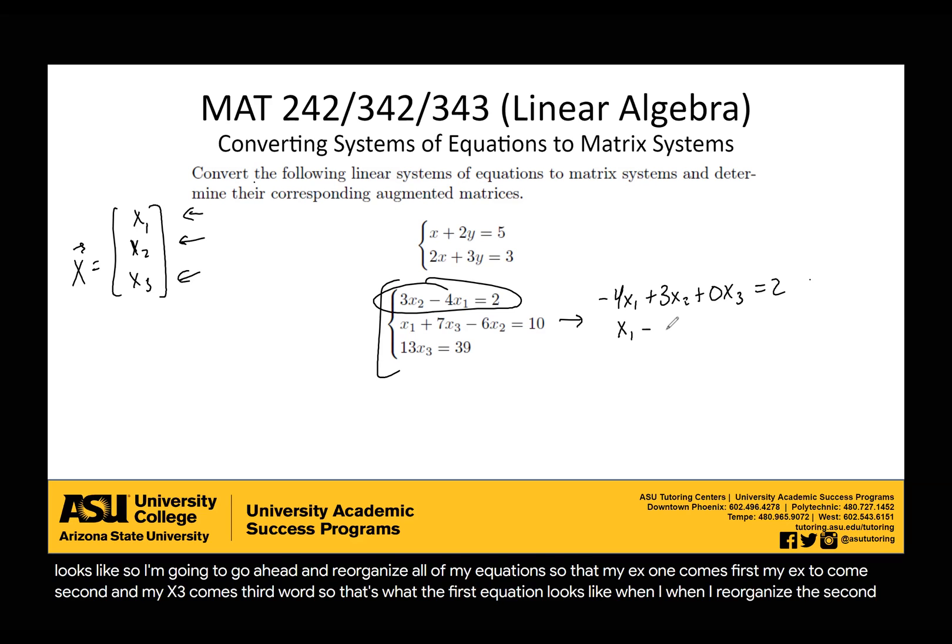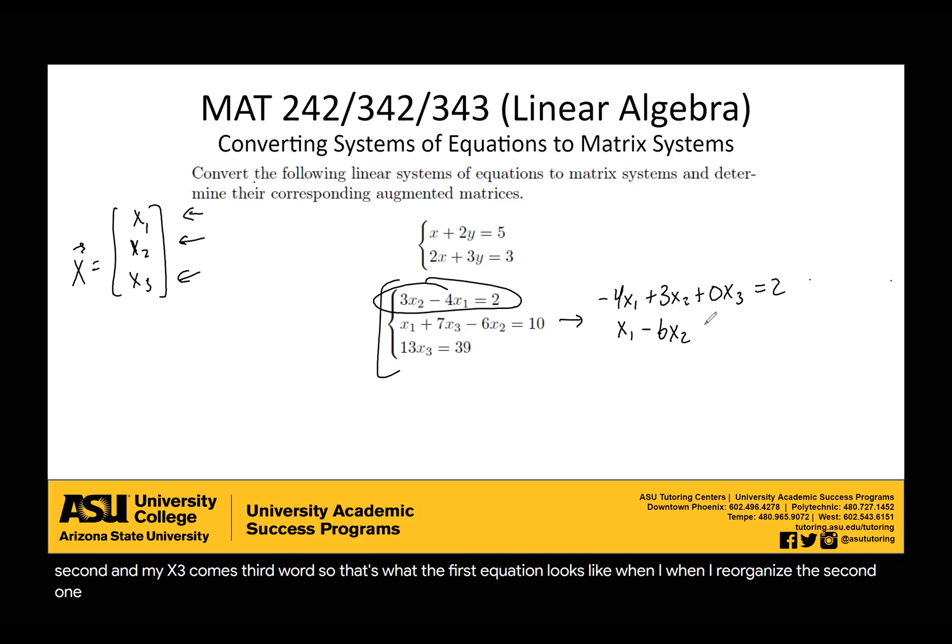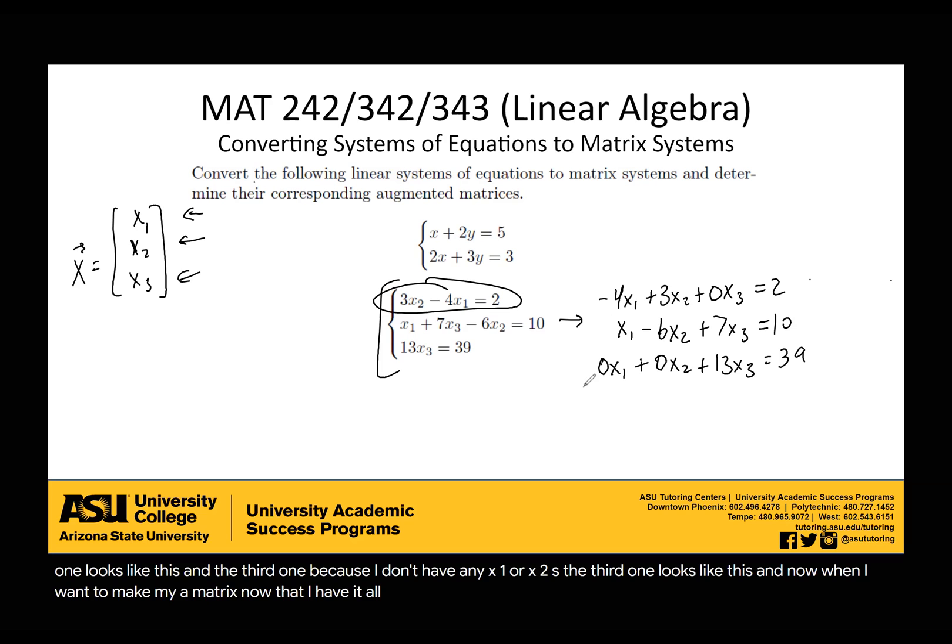So that's what the first equation looks like when I reorganize. The second one looks like this. And the third one, because I don't have any x1s or x2s, looks like this. Now when I want to make my A matrix, now that I have it all in the correct order, I literally just take the coefficients and put them into a matrix.